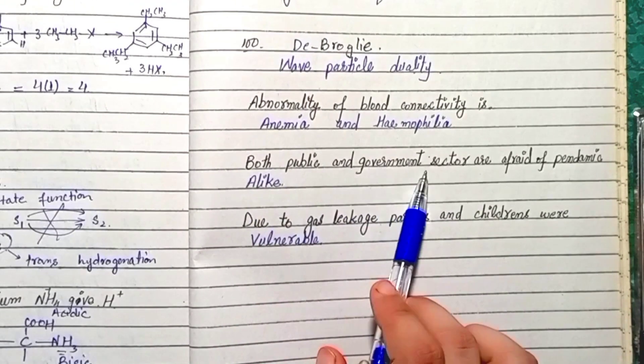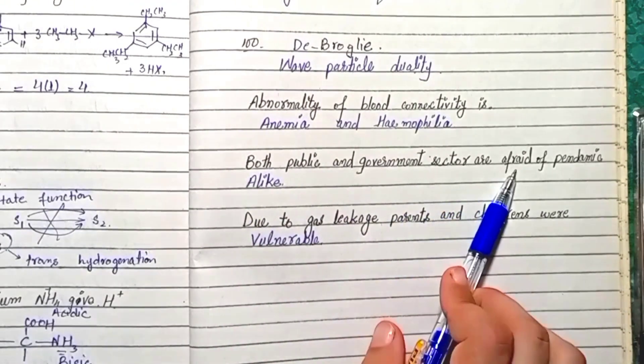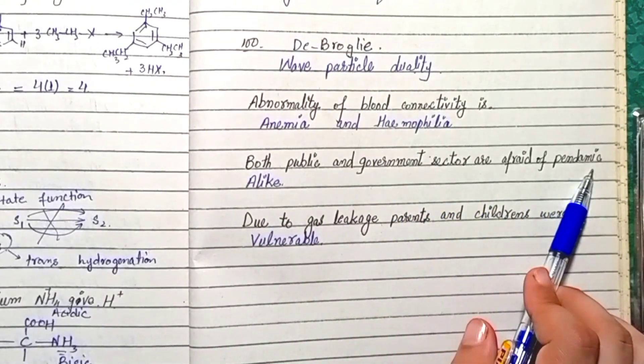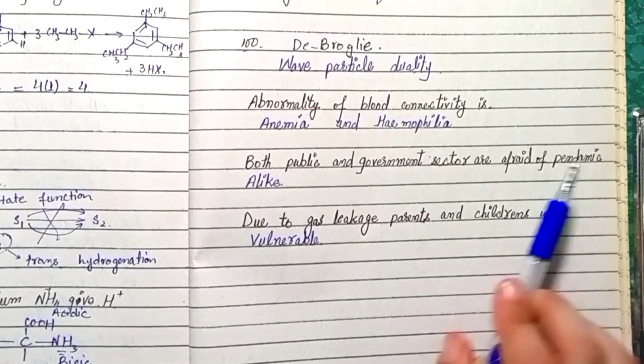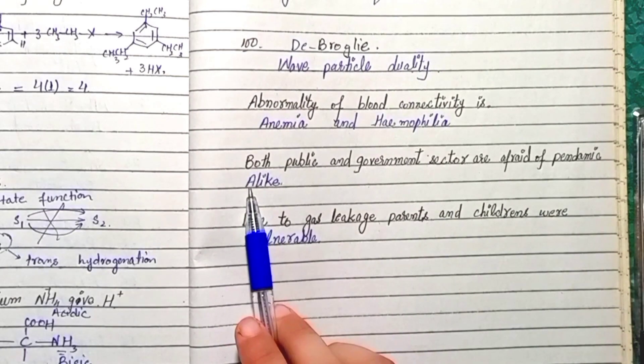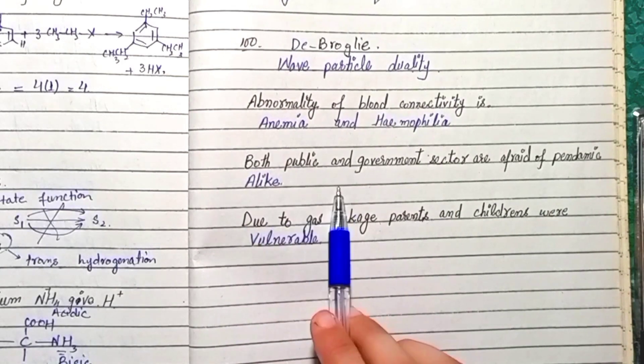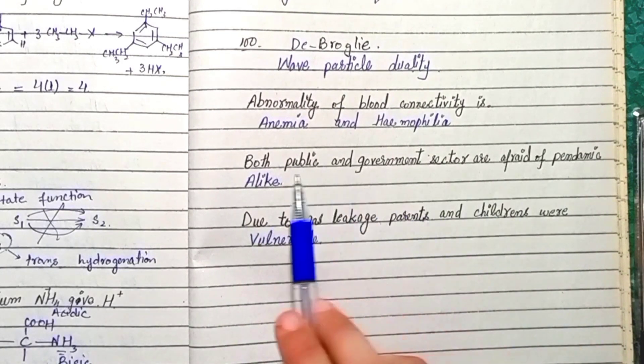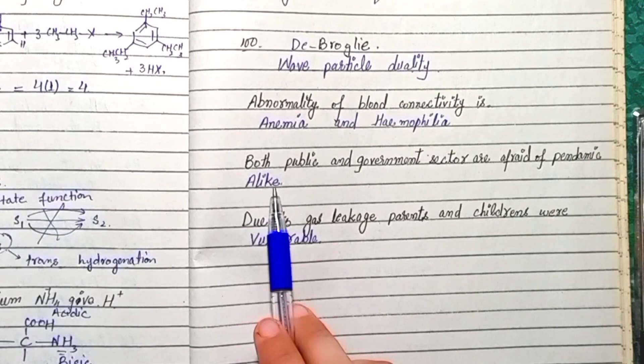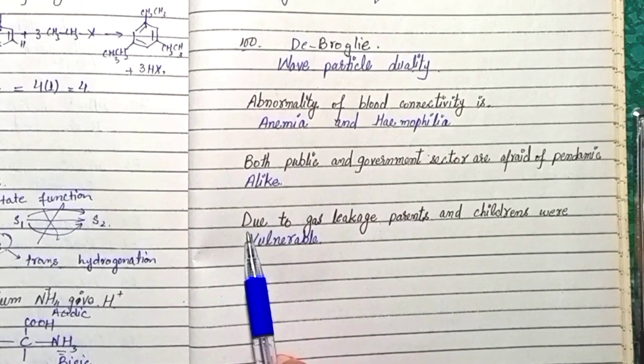Next question: Both public and government sectors are afraid of pandemic. The correct answer is 'unlike.'